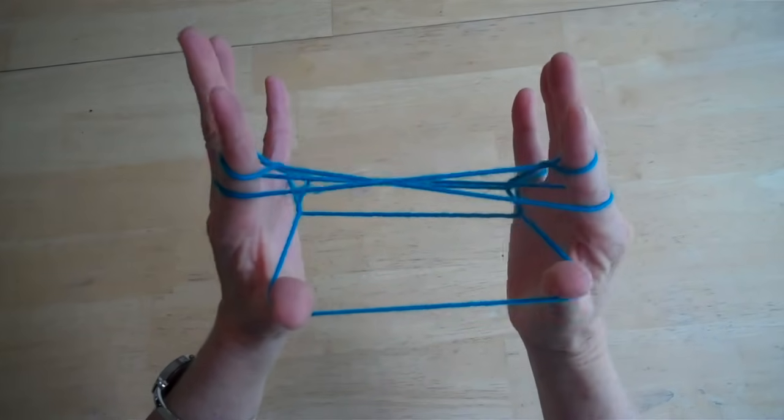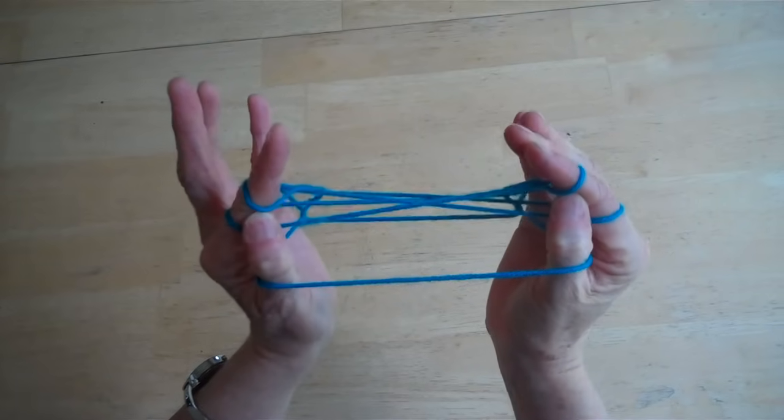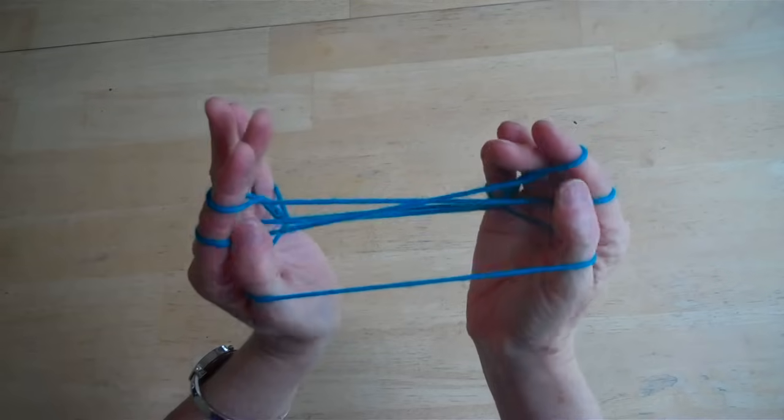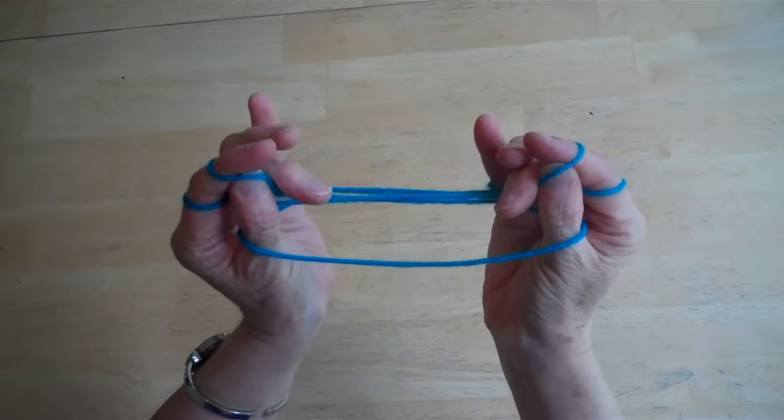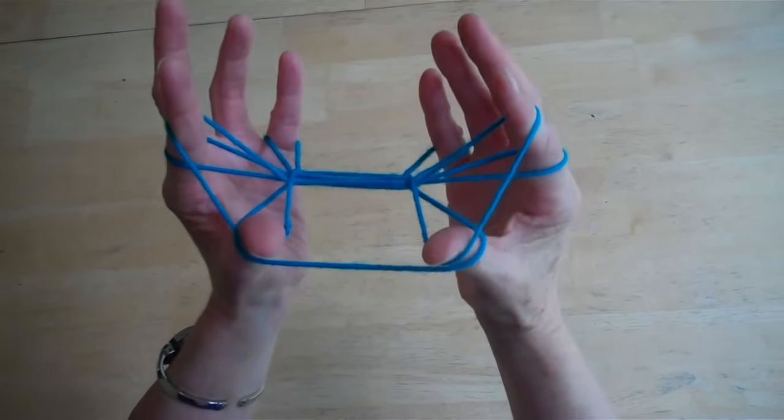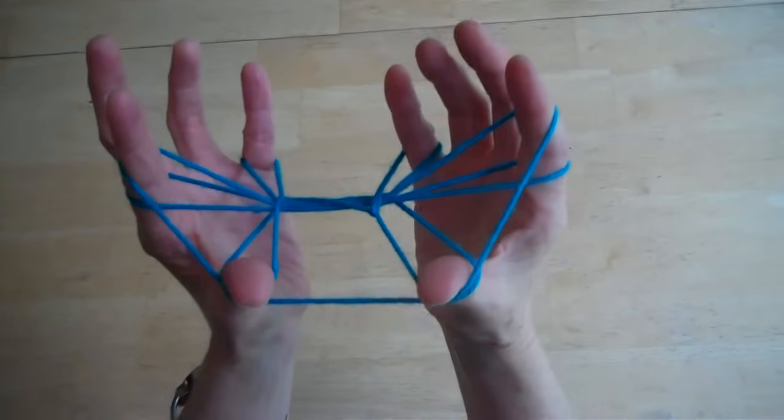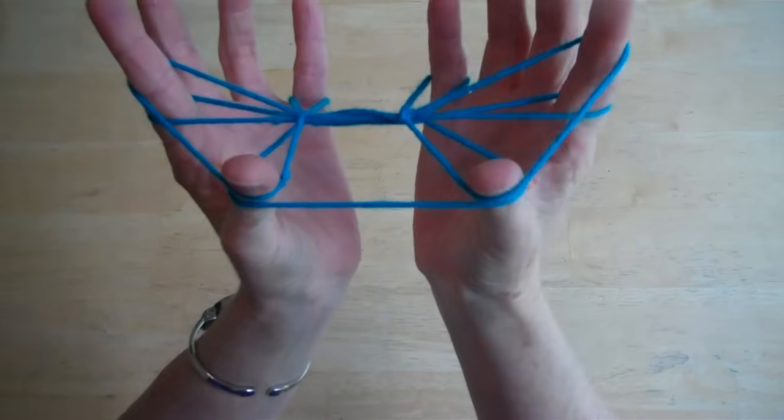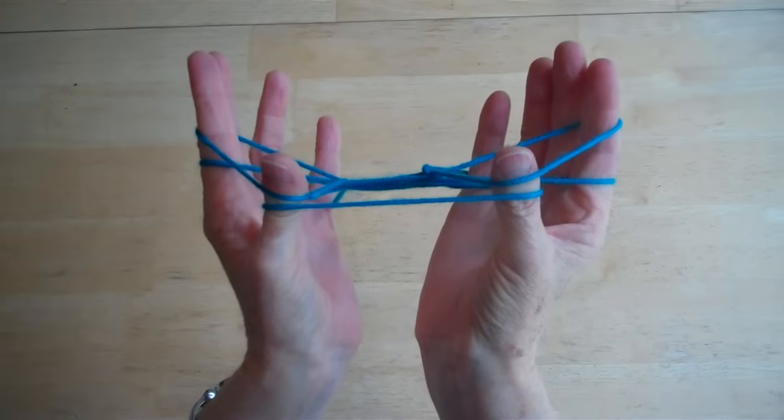The next step is you're going to take your thumbs and you're going to put them in here on this top loop on your pointers, and you're going to lift that string. Don't take it off of your pointer though. Just put it on your thumb. Now you've got two strings on your thumbs.